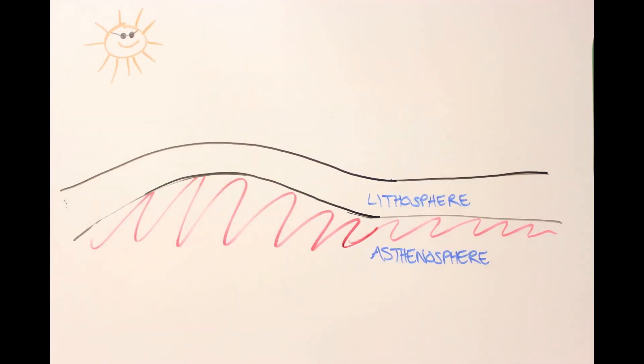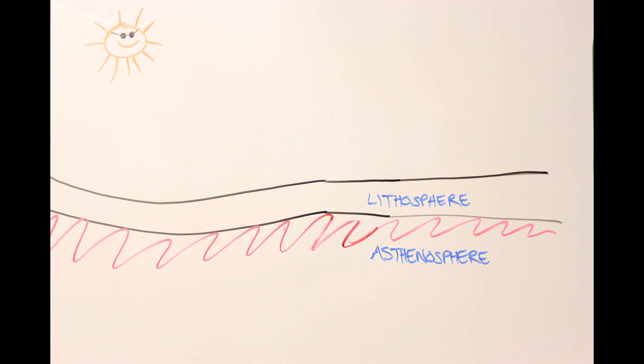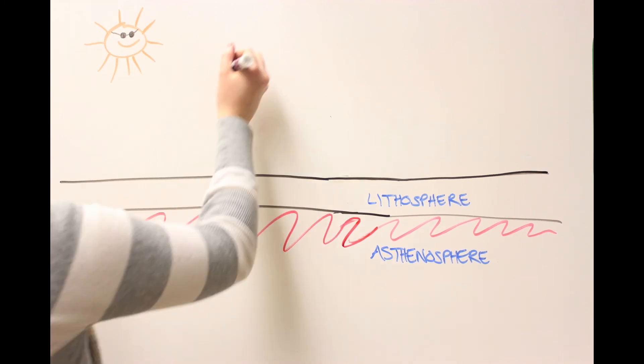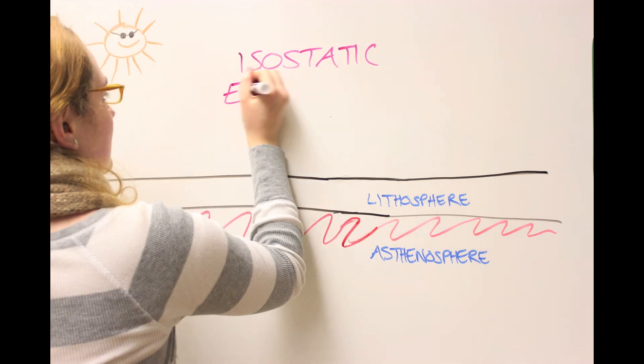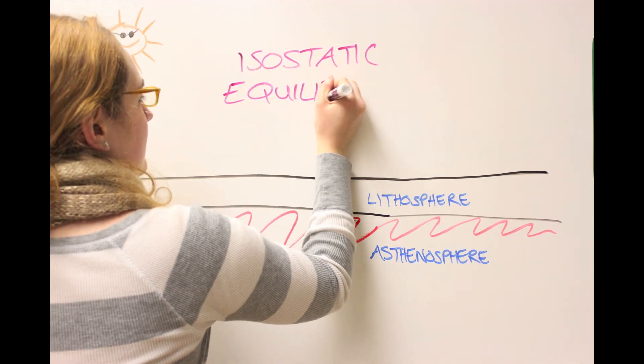Because every action has an opposite and equal reaction, the rebound does not stop once it reaches the previous balance level. This bouncing pattern will continue until the movement settles and equilibrium is achieved.